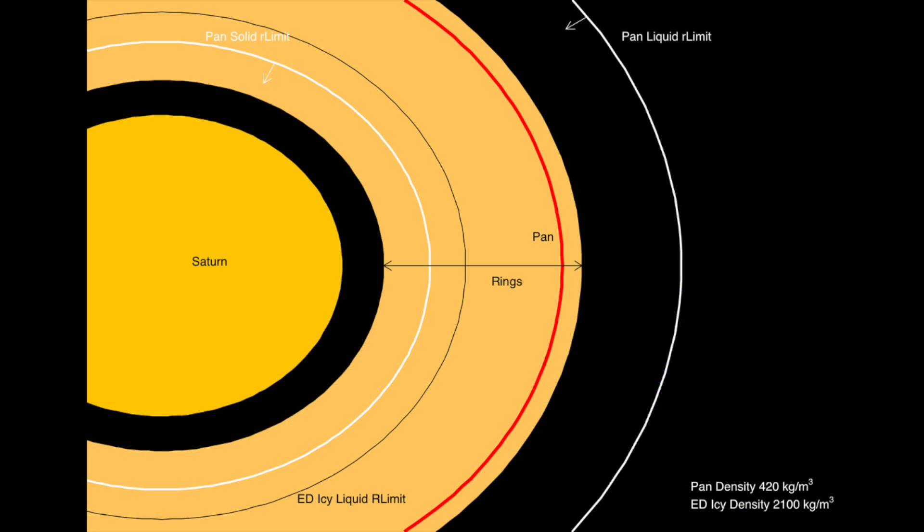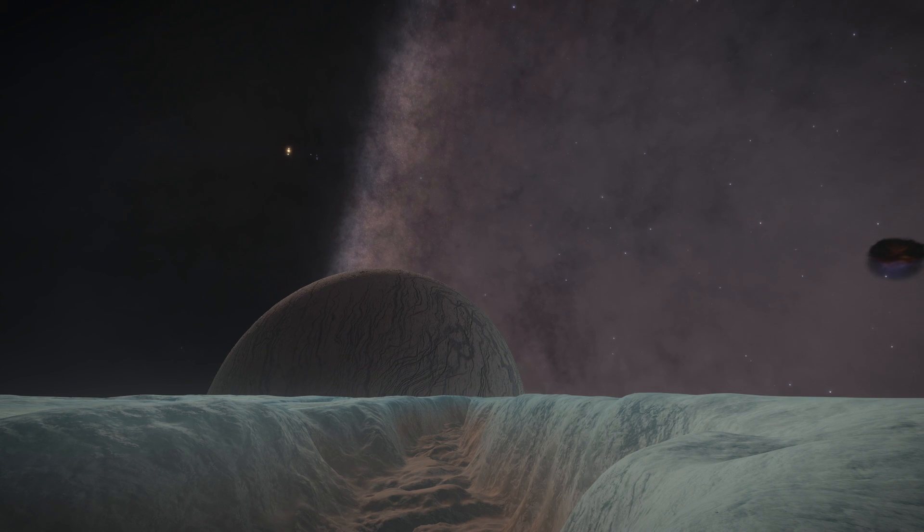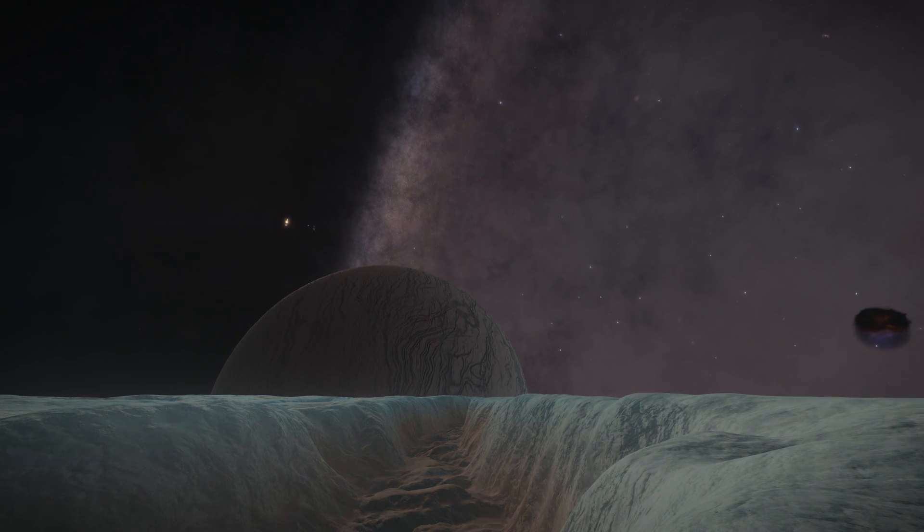Now, if we plot the lines for Elite Dangerous' lowest density moons, icy moons, we find that if an icy moon formed, and was able to decay in its orbit, it could exist quite well closer to an object like Saturn. The amount of tidal stress and volcanic activity on such an object would be rather high, but it would not be impossible, so long as the density was high enough. This is why the limit is not as simple as people often think.